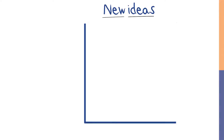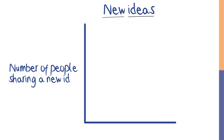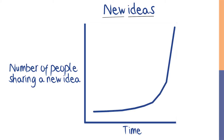Ideas spread via a reinforcing feedback loop, and so the number of people sharing a new idea can have the familiar exponential growth shape that is produced by reinforcing feedback loops. Fashions, fads, and the latest gadgets spread in this way, but so do important ideas about how our world works and how we fit into it.